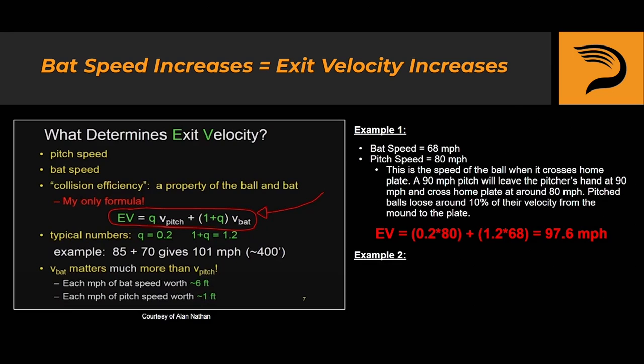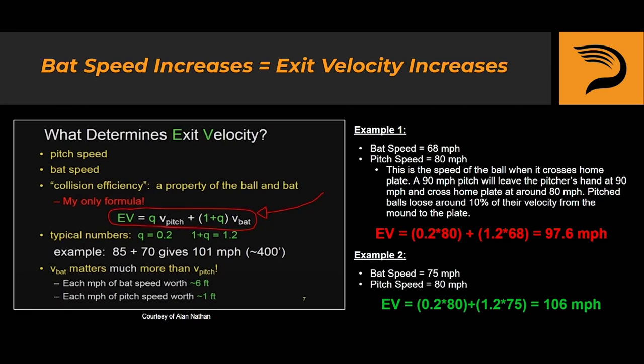On to example number two. This time you are swinging the bat 75 miles per hour. Pitch speed stays the same at 80 miles per hour and again we are going to assume a perfect collision efficiency of 0.2. The exit velocity of this batted ball will be 106 miles per hour. As we can see, swinging the bat faster has a direct impact on how hard you will be able to hit the baseball.